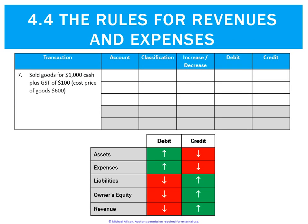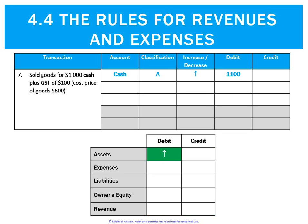Let's process a transaction: goods sold for $1,000 cash plus GST of $100, with a cost price of $600. We'll treat this as two mini-transactions — the sale price first, then the cost price. Starting with the sale amount, cash is an asset that is increasing, and assets increase on the debit side, so cash goes up $1,100.